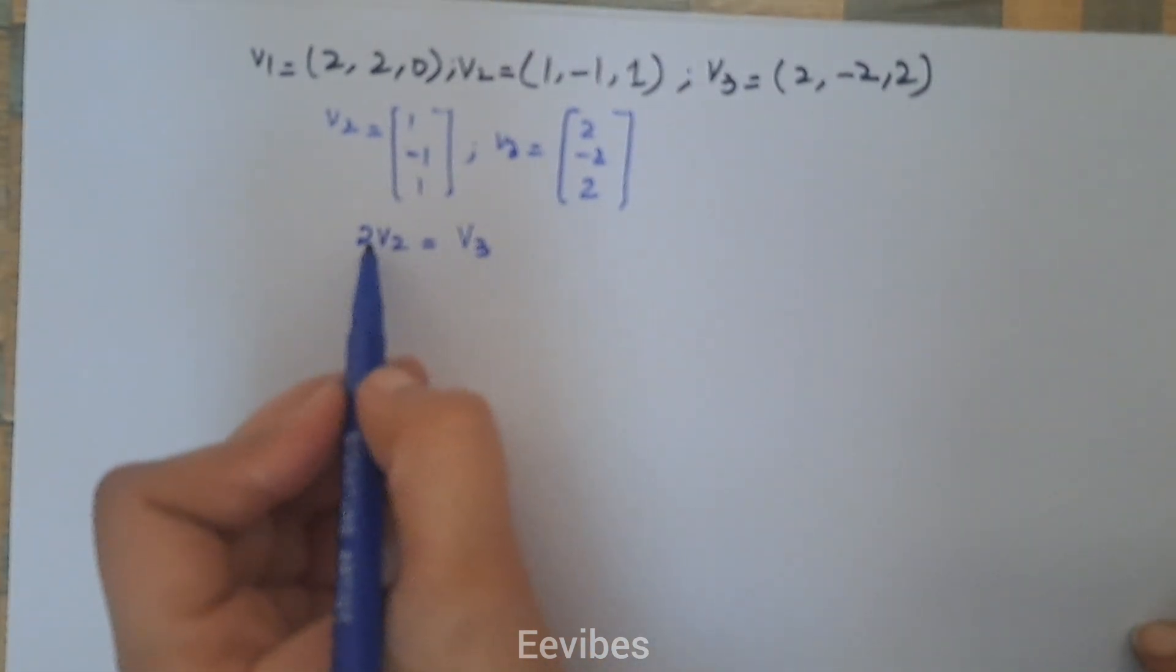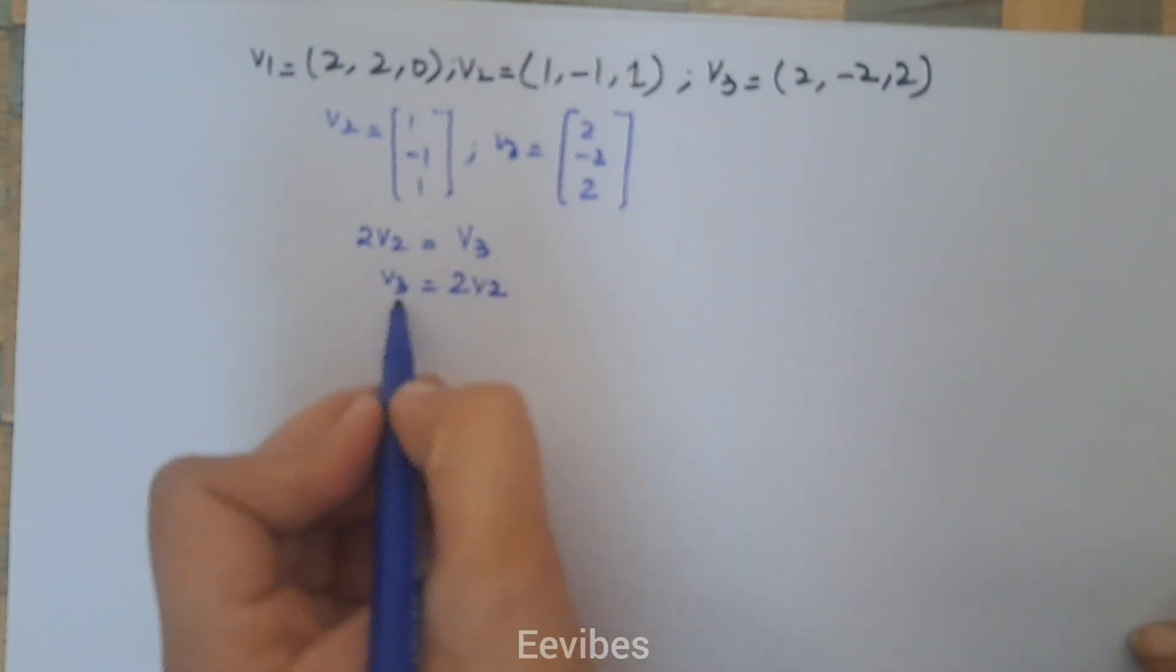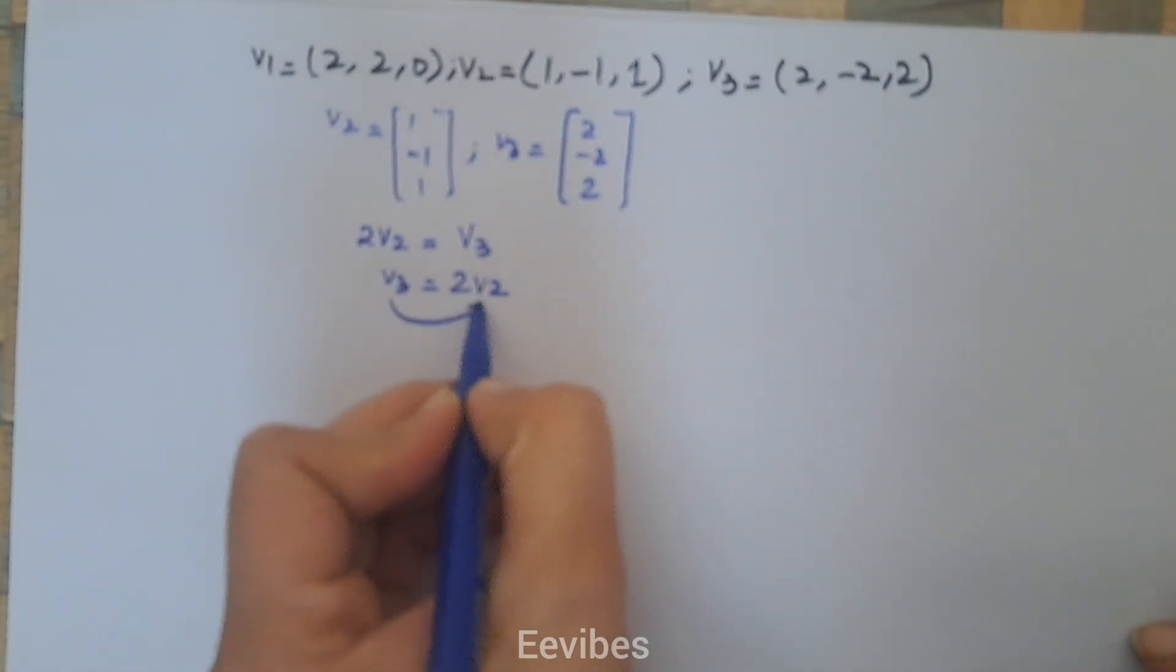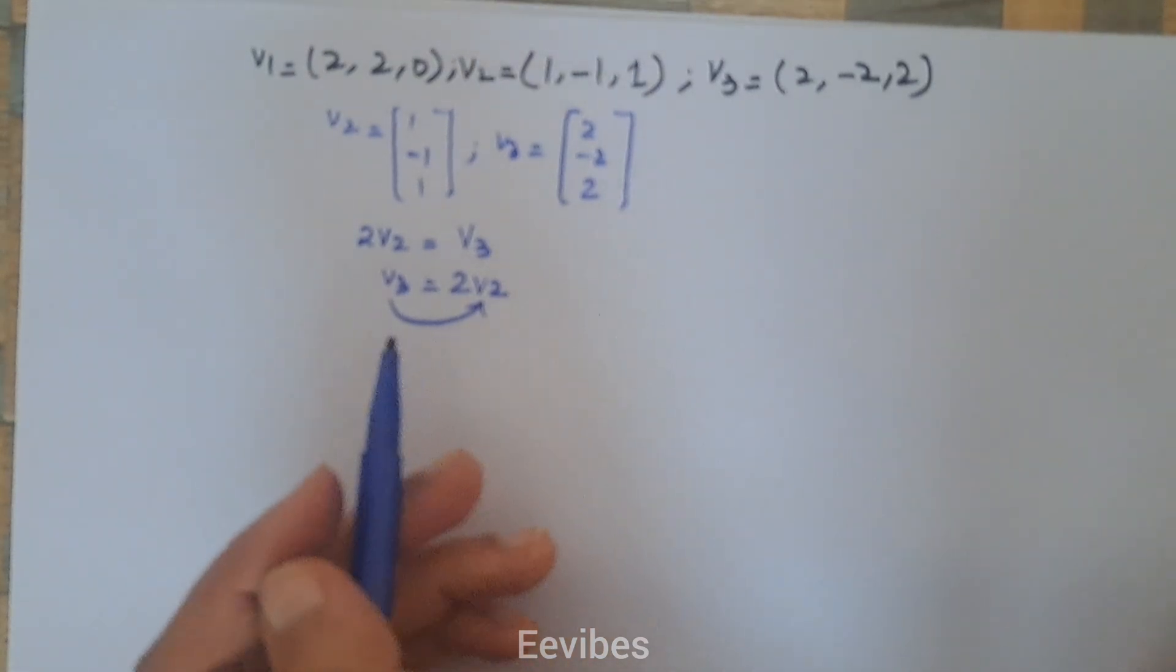So what does this mean? It means that V3 equals 2 times V2, and the value of V3 is actually depending on the value of V2. This is one way to see the correlation.